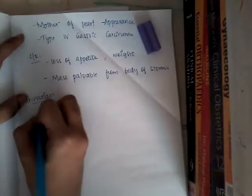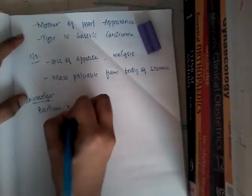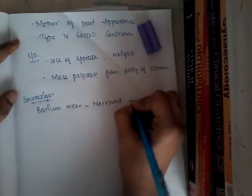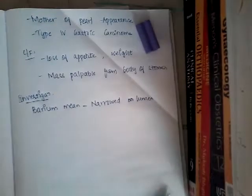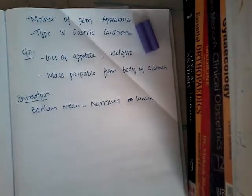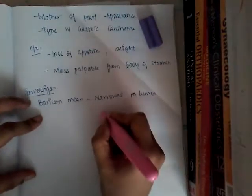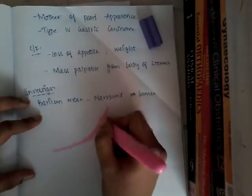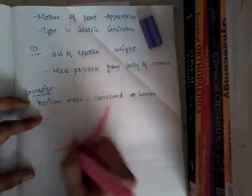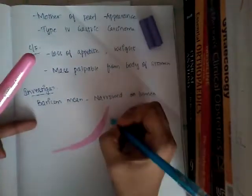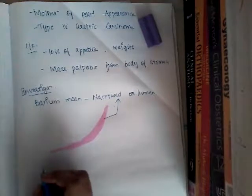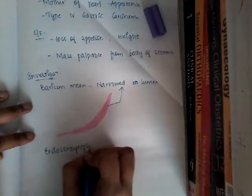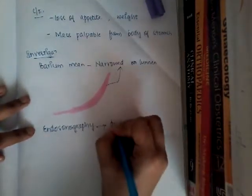On investigations: first, if you do a barium meal, you see a narrowed lumen of the stomach — the barium meal shows the lumen to be completely narrowed. You can also do endosonography, which shows fibroblastic proliferation in the submucosa, and this is diagnostic.